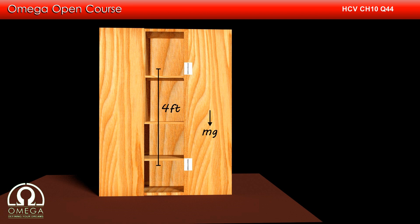If we look about the upper hinge, the direction of the torque due to gravity is clockwise or into the plane. Now the torque due to horizontal component of the force at the lower hinge must balance this torque, and hence the direction of the horizontal component of the force at the lower hinge must be towards right.